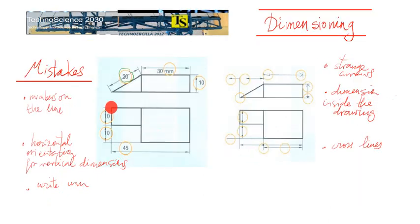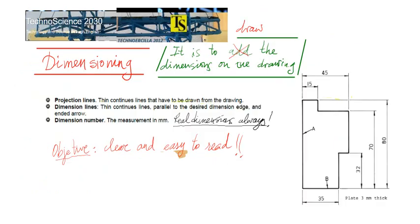Another common mistake is to use horizontal orientation for the numbers when they are vertical dimensions. So because the dimensions are vertical, then the orientation of the numbers have to be like this in a vertical weight. So for horizontal dimensions, horizontal orientation, vertical for the vertical dimensions.